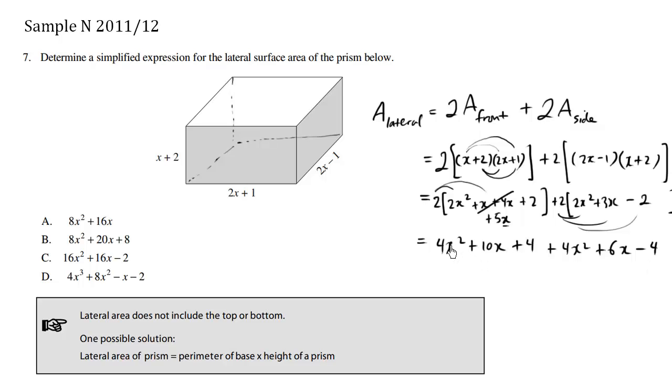We're going to gather like terms. We have x squared here. We have x squared here. And then we have our x's over here and over here. And the rest are just numbers.